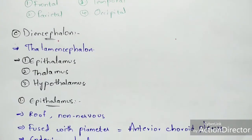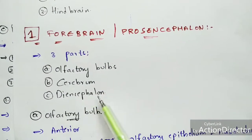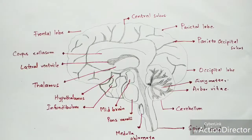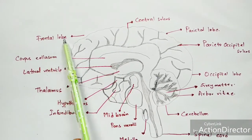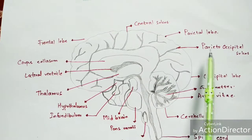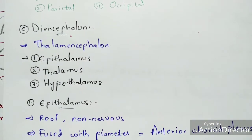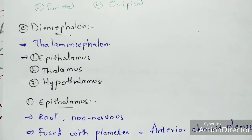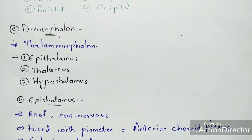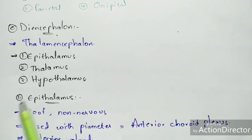The third part of the forebrain is the diencephalon. The diencephalon is also called the thalamencephalon because it is made up of thalamus. This diencephalon is divided into three main parts: epithalamus, thalamus, and hypothalamus.